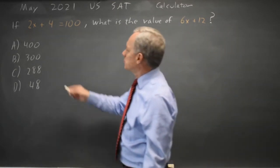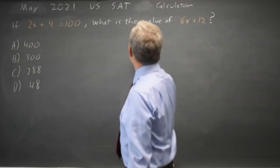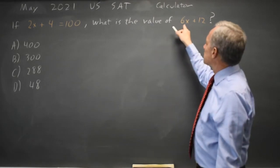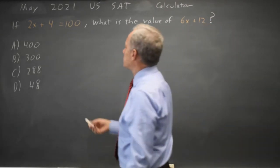I look at whether this is a connection to the original expression. 2x plus 4 and 6x plus 12, we see that this is 3 times 2x plus 4.